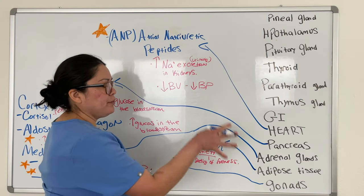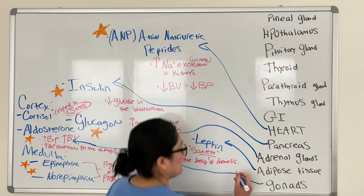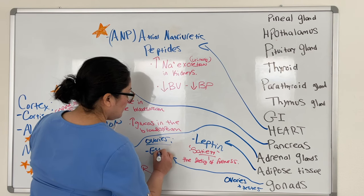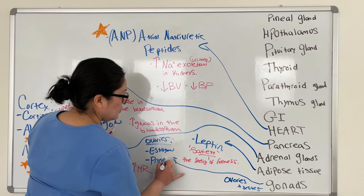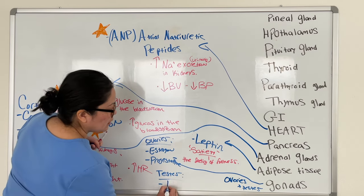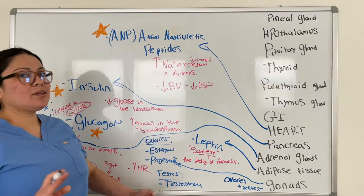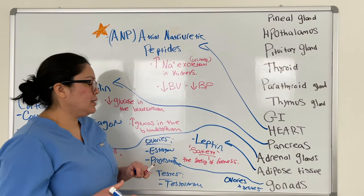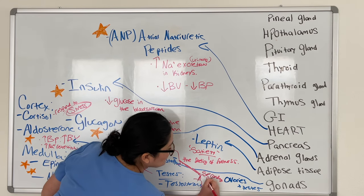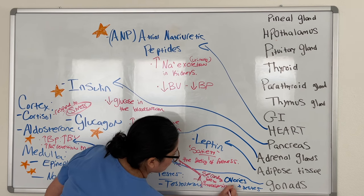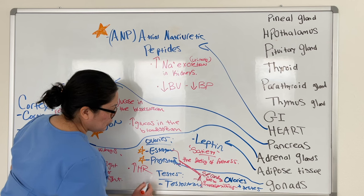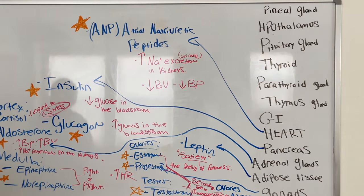Your gonads — ovaries in females and testes in males — the ovaries excrete estrogen and progesterone, and the testes release testosterone. These aren't the only things they release, but these are the most important. Relate estrogen, progesterone, and testosterone to secondary sex characteristics — make sure you know all three.